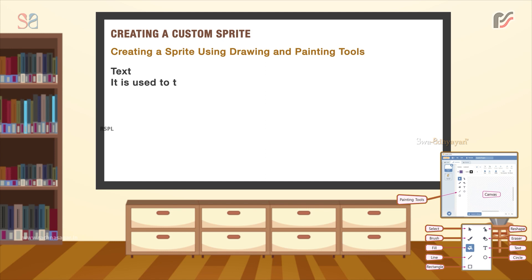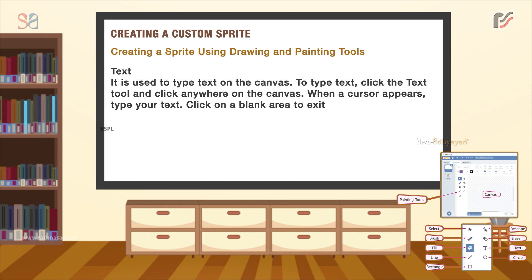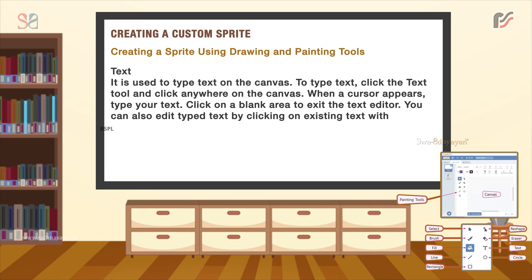The Text tool is used to type text on the canvas. To type text, click the text tool and click anywhere on the canvas. When a cursor appears, type your text. Click on a blank area to exit the text editor. You can also edit typed text by clicking on existing text with the text tool.